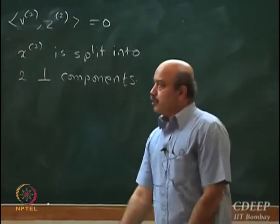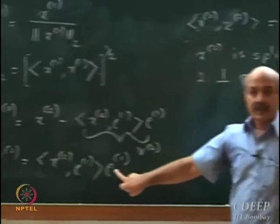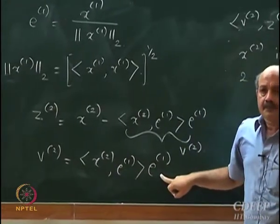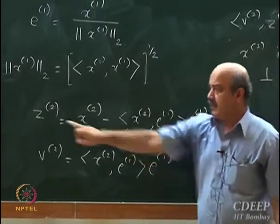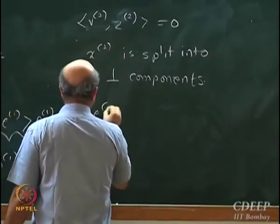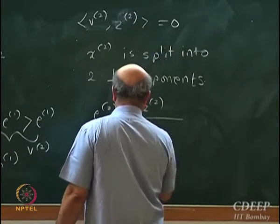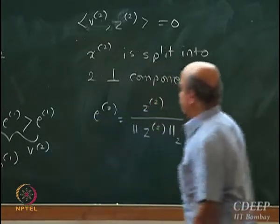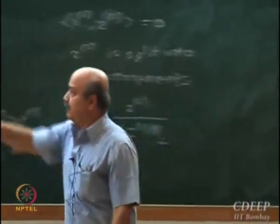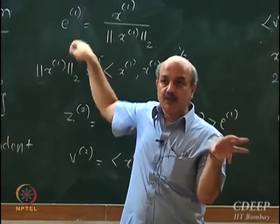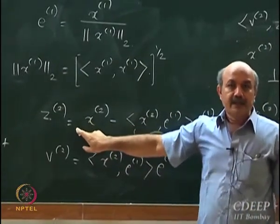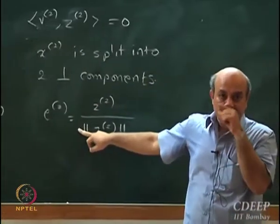Now I have two directions which are orthogonal: E1 and Z2, since V2 is just some scalar times E1. I then define E2, which is Z2 divided by the norm of Z2. So starting from X2, I removed the component along E1 to create Z2, then normalized Z2 to create E2. Now E1 and E2 are both unit magnitude and orthogonal to each other.